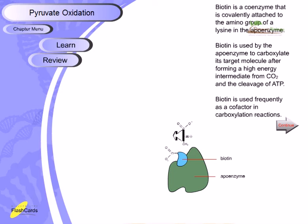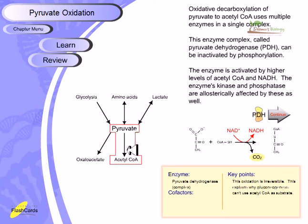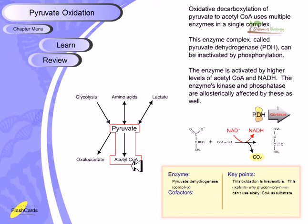The third and most common conversion of pyruvate is oxidative decarboxylation of pyruvate to acetyl-CoA, though it is a really difficult process. The enzyme complex needed for this conversion is called the pyruvate dehydrogenase complex, or PDH complex. It can be inactivated by phosphorylation of the enzyme, and it is activated by higher levels of acetyl-CoA and NADH. The kinase and phosphatase enzymes are allosterically affected by these molecules as well.